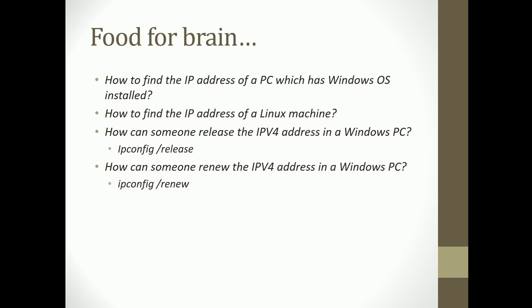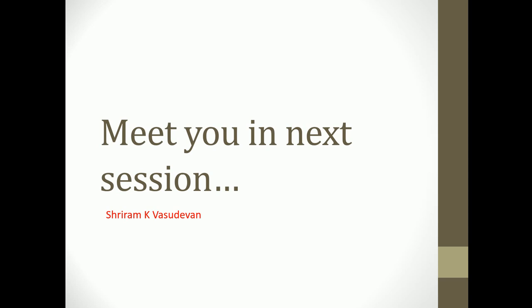Some useful practical commands: to find the IP address of a Windows PC, use ipconfig; for Linux, use ifconfig -a. To release an IP address on Windows, use ipconfig /release; to renew it, use ipconfig /renew. You can try the release and renew commands on your machine when connected to a Wi-Fi or LAN — it will not hurt you, and you will get an IP address allocated properly again. Thank you very much; we will meet again with another interesting protocol in the next session.